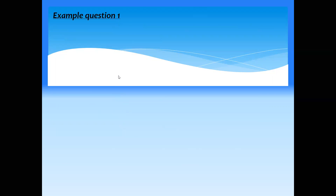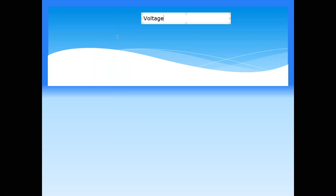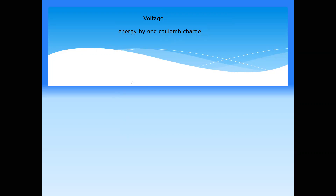What is voltage? Voltage is the energy carried by a unit charge. How much energy one coulomb of charge carries — that is known as voltage. Coulomb is the unit of charge.